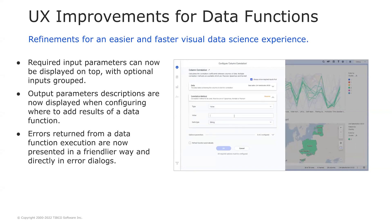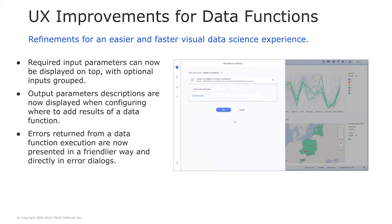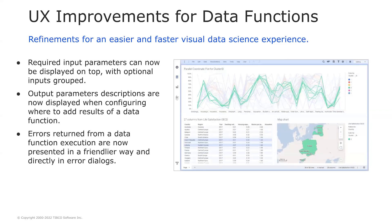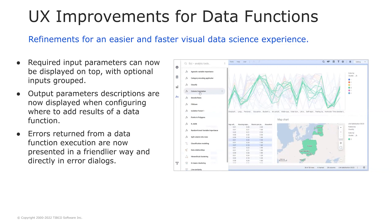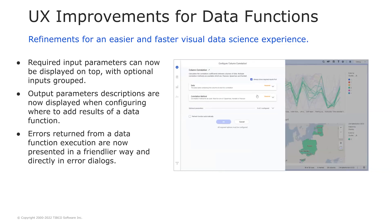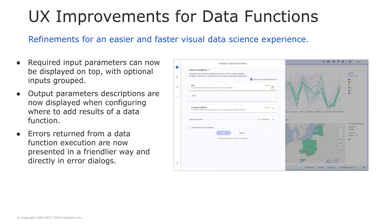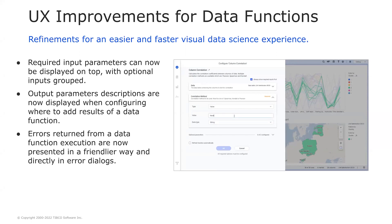We've also made a few refinements to the data function UI. Some data functions may contain lots of input parameters, with some marked as required and some as optional. Now you can decide to group the optional parameters and have all the required ones on top. This is especially useful when you have data functions with a large number of parameters to set, making them faster to configure.